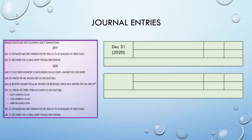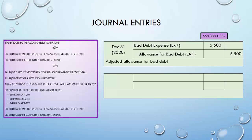At the end of 2020 they estimate bad debt expense at 1% of $550,000 in credit sales — the same entry as in 2019. They debit Bad Debt Expense for $5,500 and credit Allowance for Bad Debt for $5,500. Then they close bad debt expense: debit Income Summary $5,500 and credit Bad Debt Expense $5,500. With the percent of sales method, you simply add a percentage of credit sales to the allowance each period — constantly filling it up as you assume some sales will never be collected.